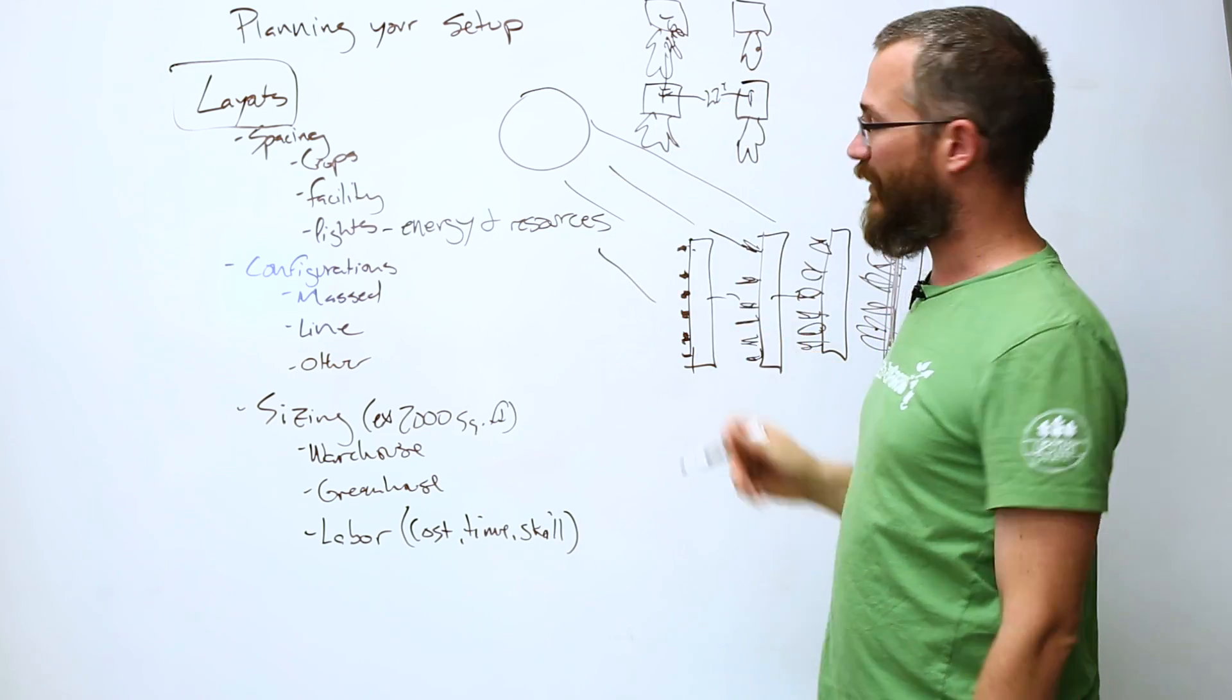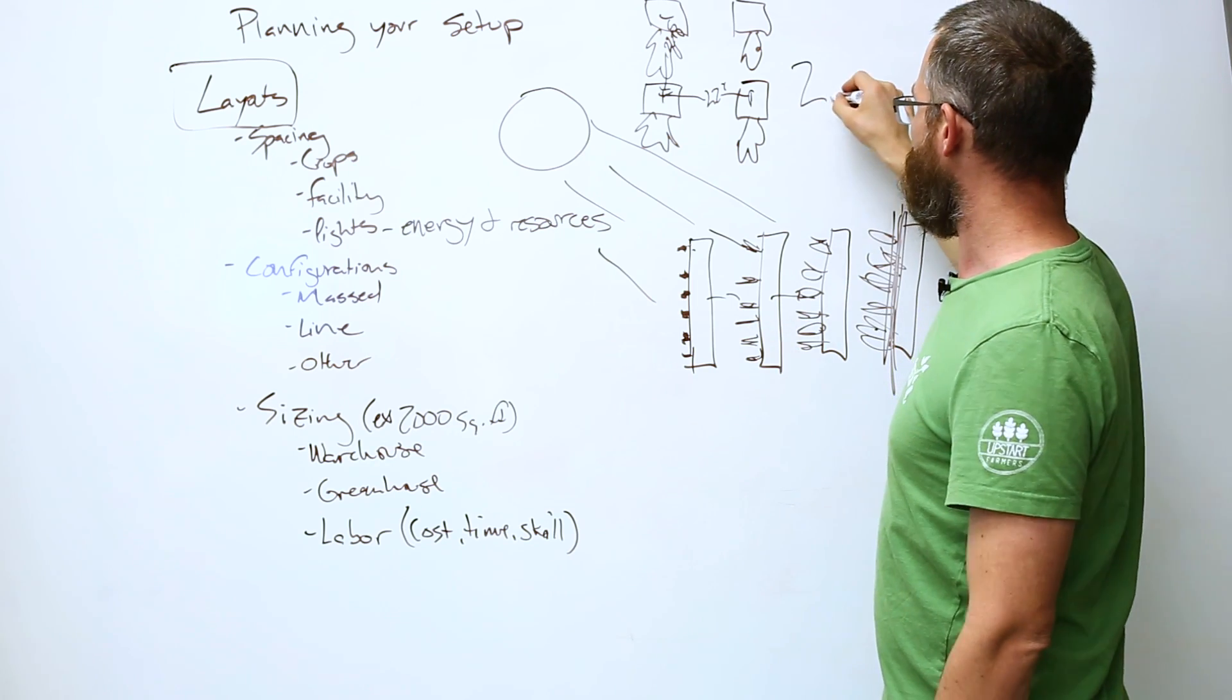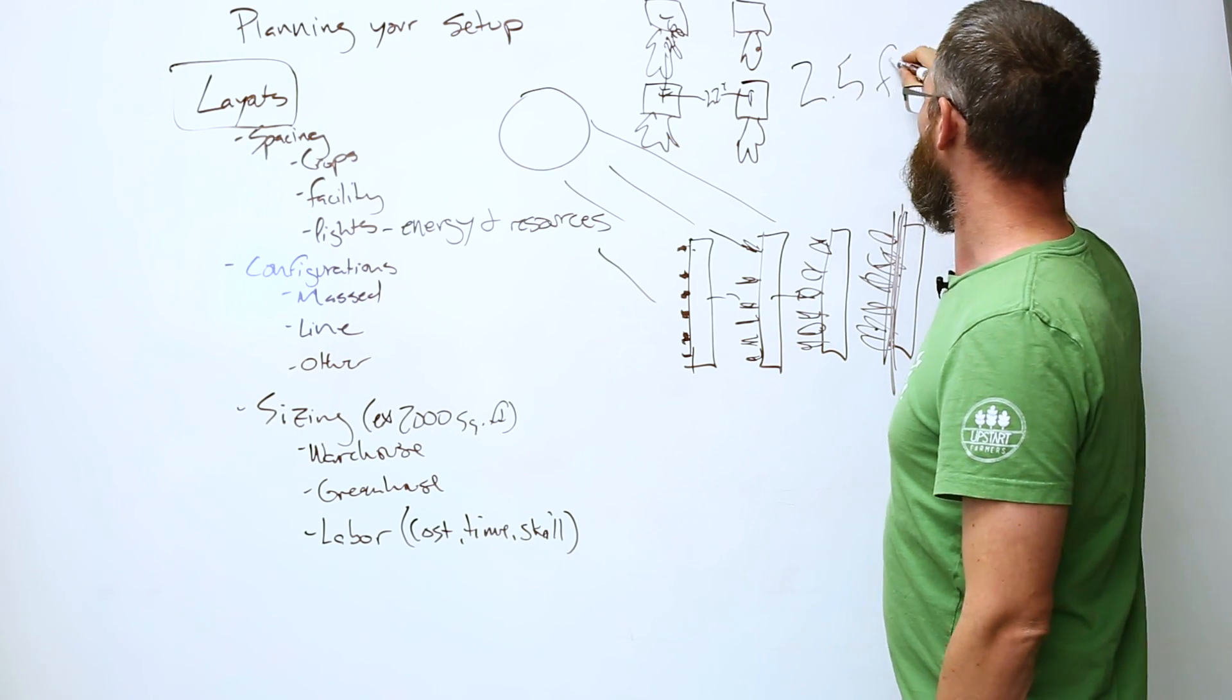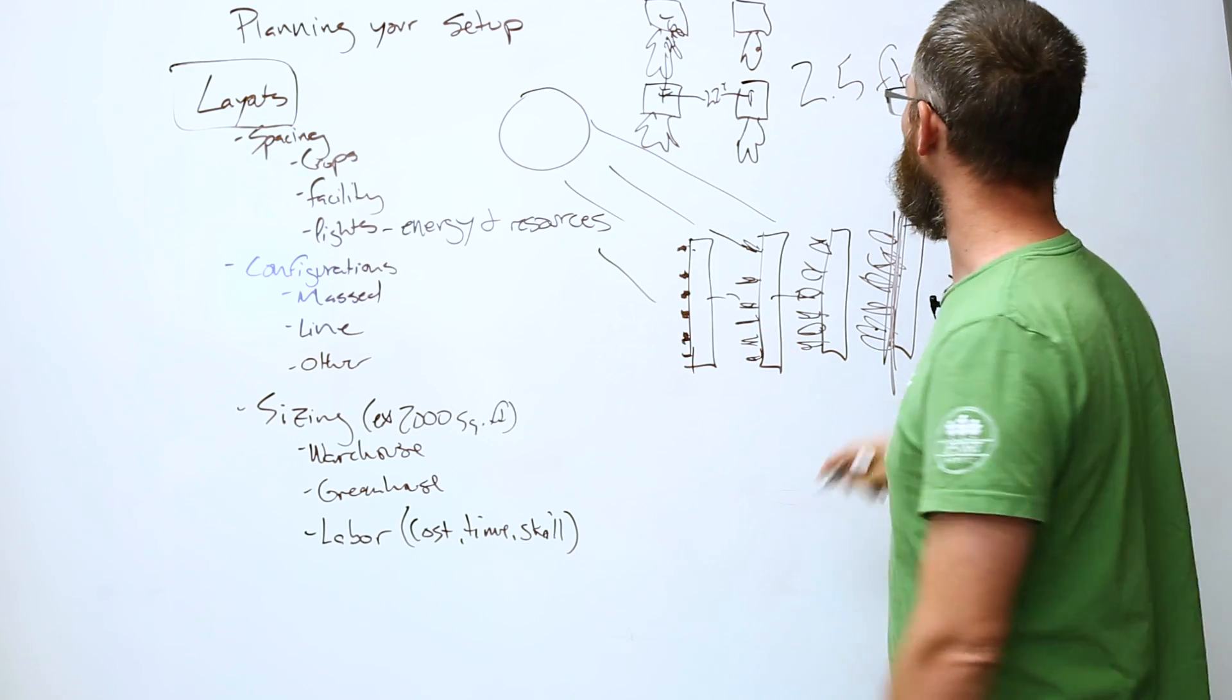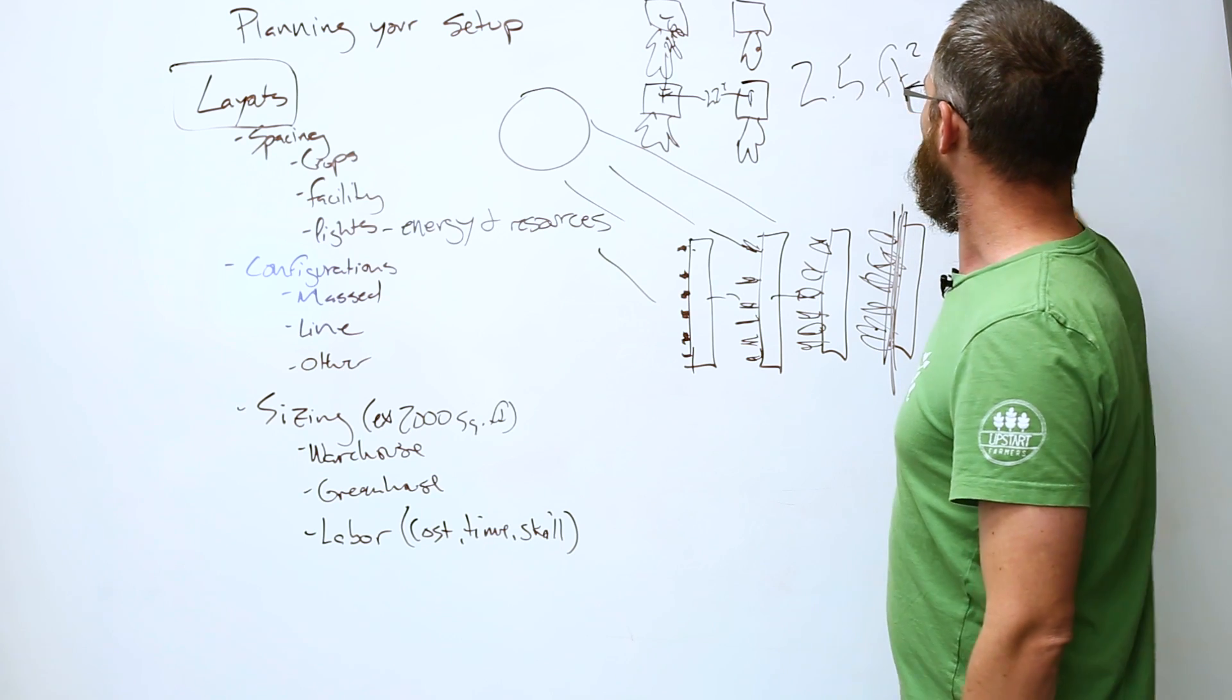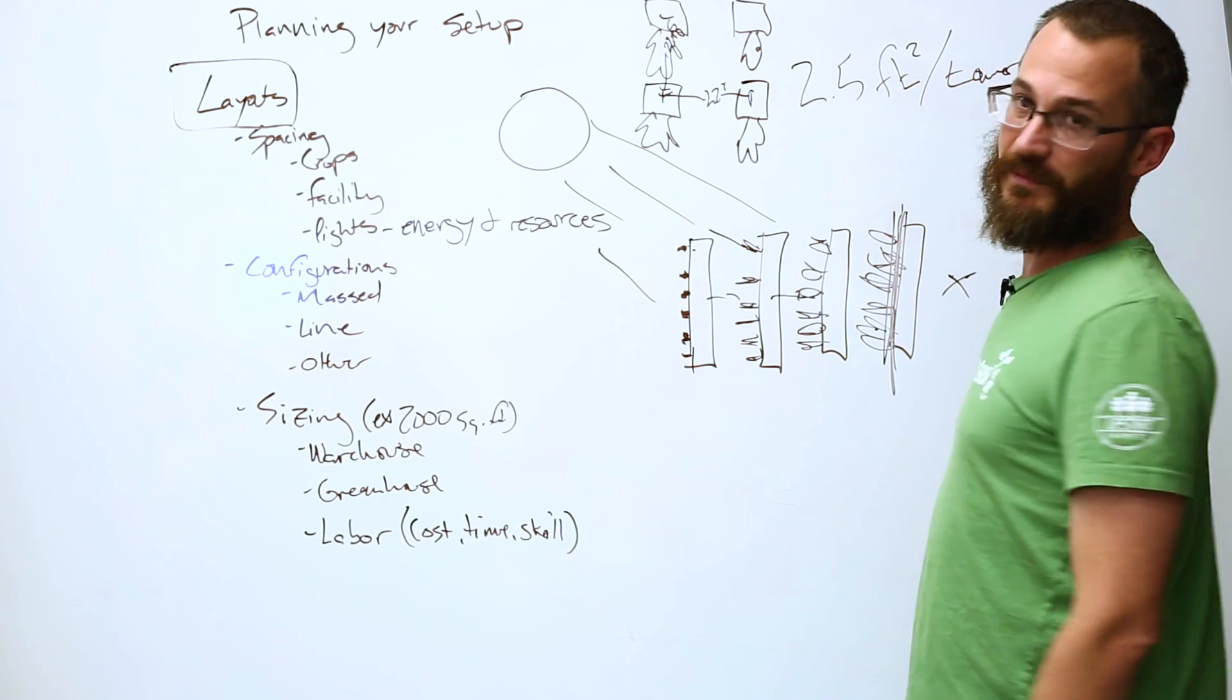This roughly comes out, I like to be super generous, super conservative, and make sure that we're not over-representing anything, that we're giving people the most reasonable numbers. So that ends up being basically two and a half square feet per tower, okay?